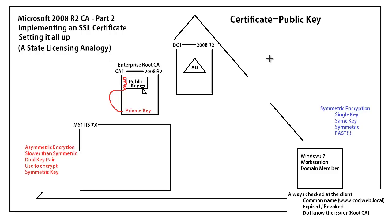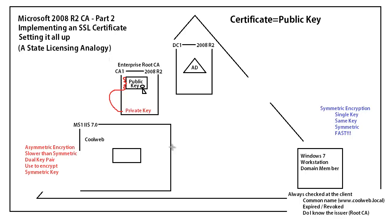IIS is going to play the role of the shopping center. Since IIS can have multiple websites on a server, each website will play the role of the business storefront. So we can have multiple websites on the server. Let's say one of those websites is CoolWeb, and CoolWeb wants to go get a certificate for its website. CoolWeb is a pretty simple website - it's got a folder called Data.